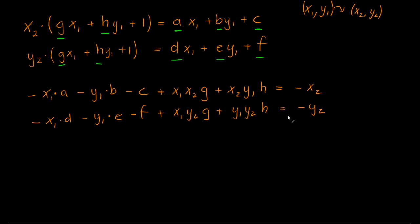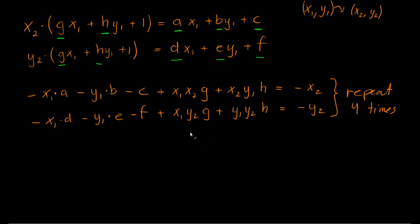This can be written in matrix form. What we need to do is collect four pairs of these equations — because we have eight unknowns, requiring eight equations to solve. Once that's set up, we can use standard techniques in NumPy to solve for the values of a, b, c, d, e, f, g, and h, which define the perspective transformation.